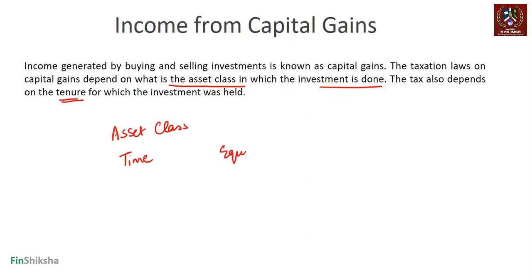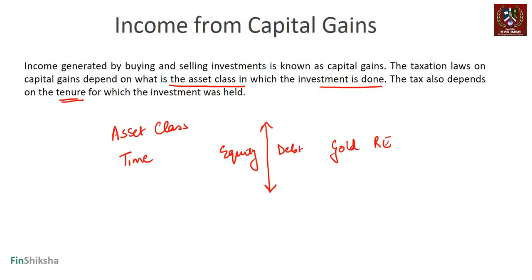We have a slide which captures whether you are investing in equities, debt, gold, real estate, and so on, and what the applicability of capital gains tax is on each. We are going to divide it between equity versus the rest. For context, in terms of equities, we are looking at instruments trading on the exchange — off-exchange instruments may get taxed differently.